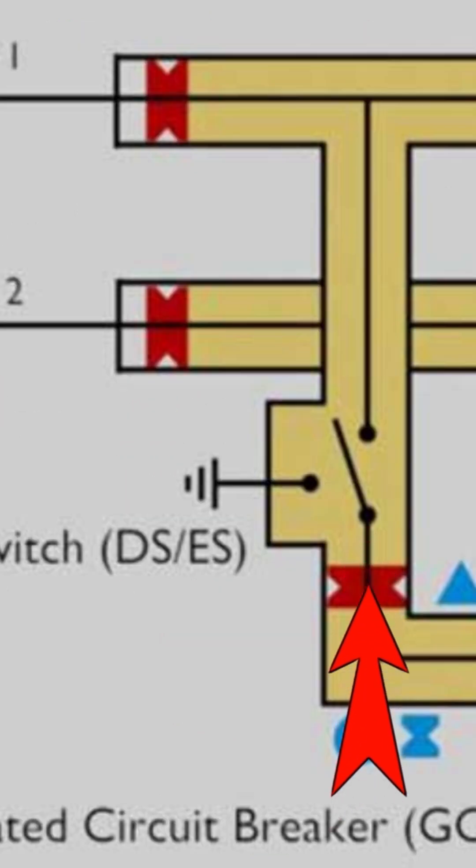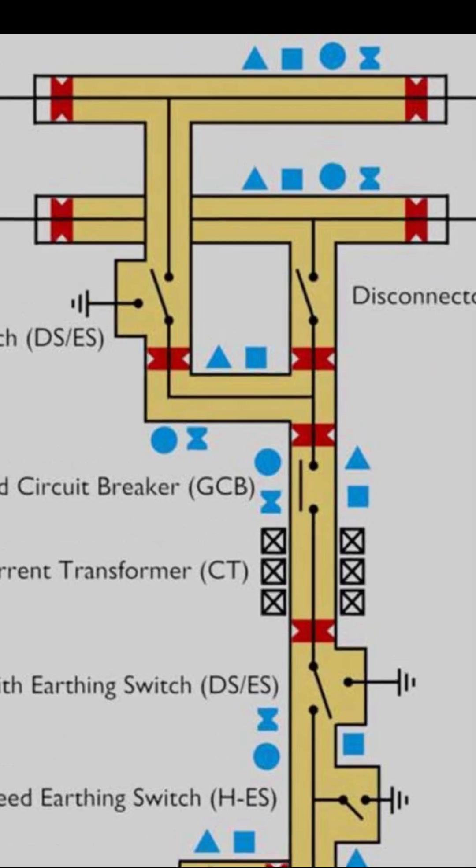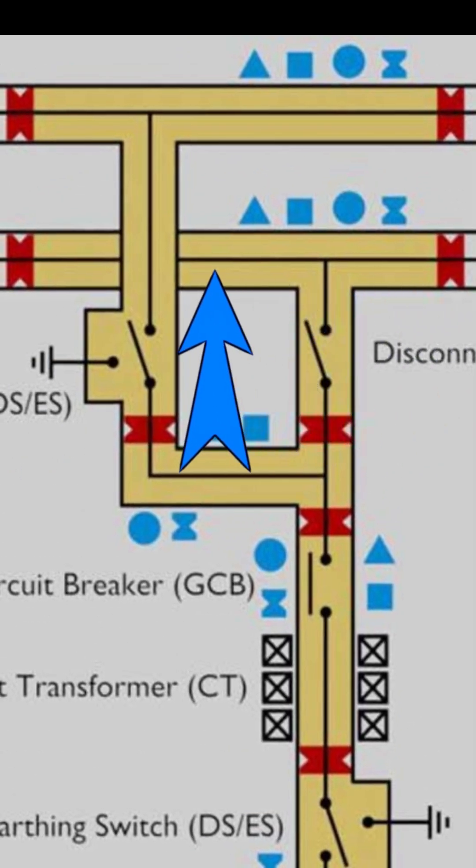This is the disconnector or isolator, and this is an earth switch. From here to here is another gas-tight compartment.